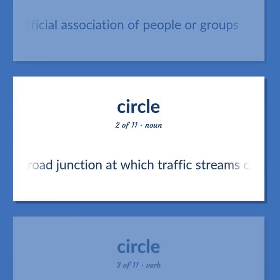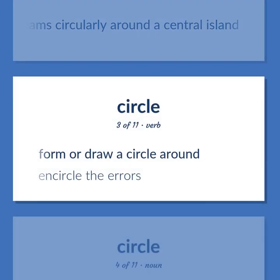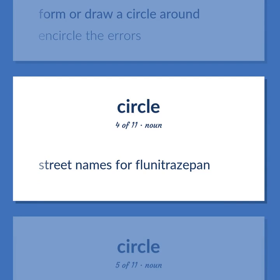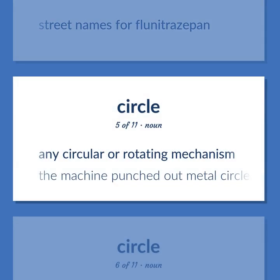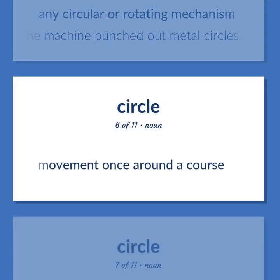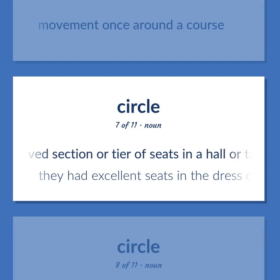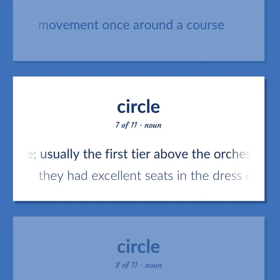A road junction at which traffic streams circularly around a central island. Form or draw a circle around. Encircle the errors. Street names for flunitrazepam. Any circular or rotating mechanism. The machine punched out metal circles. Movement once around a course. A curved section or tier of seats in a hall or theater or opera house, usually the first tier above the orchestra. They had excellent seats in the dress circle.